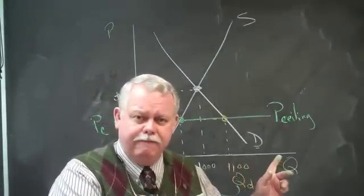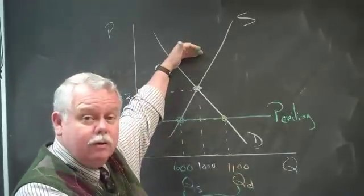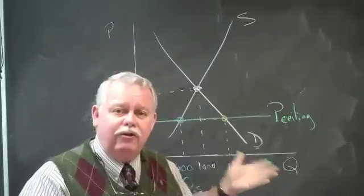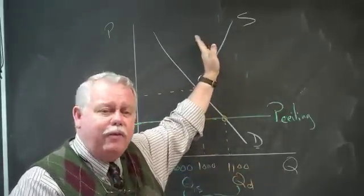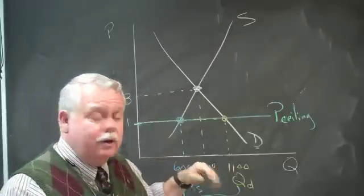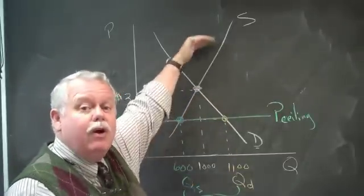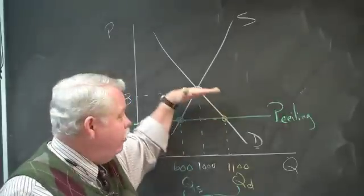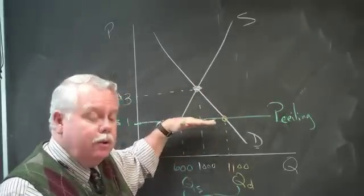Price ceiling is set up here. Price ceiling of milk, $10 a gallon, doesn't mean anything. It says you can't charge more than $10 for a gallon of milk. We're not charging $10. The market's only charging $3. So a price ceiling at or above equilibrium is meaningless. It has no effect on the market. A price ceiling below equilibrium creates a shortage.